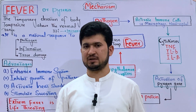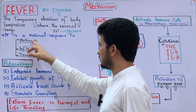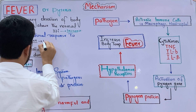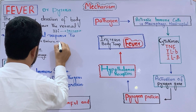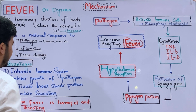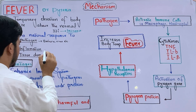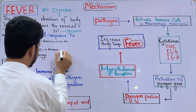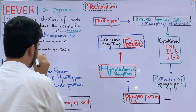Pyrexia is the body's natural response against pathogens — for example, bacteria, viruses, fungi, etc. Against these pathogens, the body temperature increases. This is also associated with inflammation — an immune reaction where the body produces an inflammatory response.